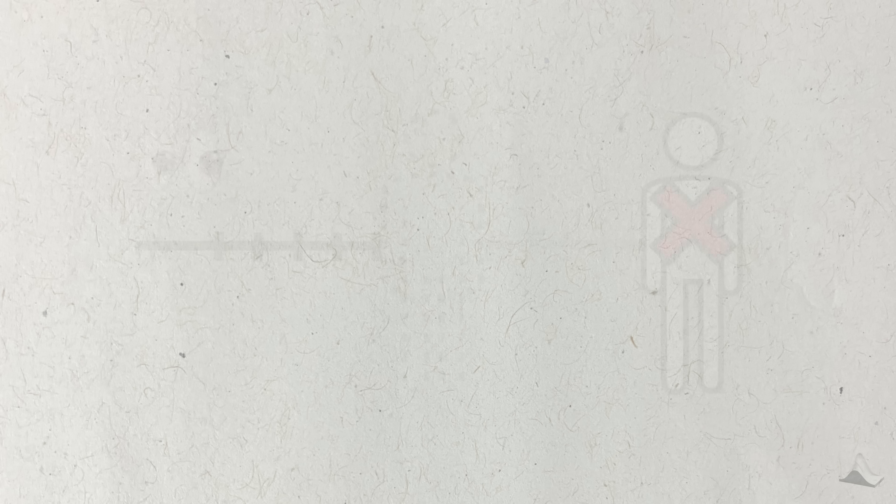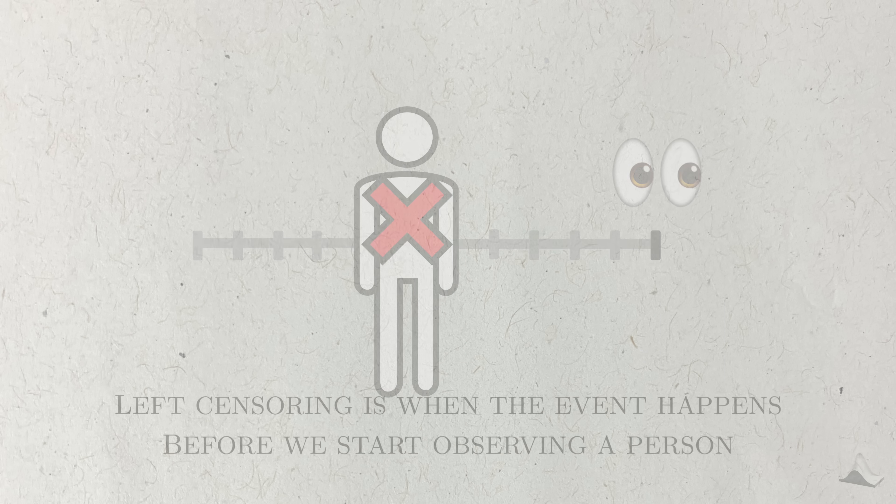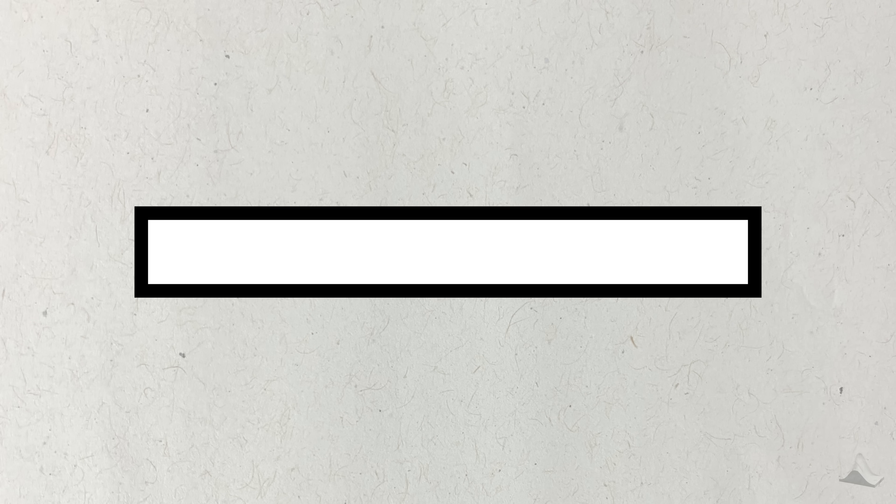Censoring is a fundamental problem in survival analysis that we have to deal with. There are multiple types of censoring. What I've described with Carl is what's called right censoring. Carl's event may or may not happen after he leaves the trial. But we'll never know because it's to the right of him leaving. Left censoring in this case would be if someone comes into the trial already having experienced the event. In clinical trials, this is less likely to happen, but it's still a thing. There's another form of censoring called interval censoring, where we do observe the event in some interval, but we can't identify exactly when it happened within this interval.